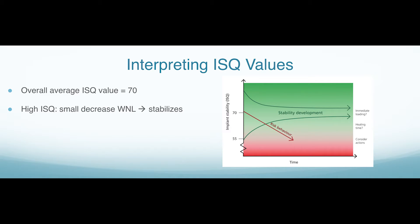If we place an implant with a high initial ISQ, typically what we're going to see over time as that bone remodeling progresses is a small decrease. That's within normal limits. But what we're looking for over time is that ISQ value to stabilize.